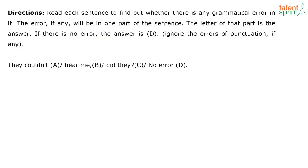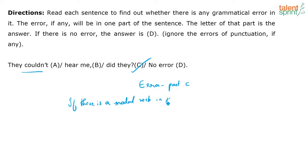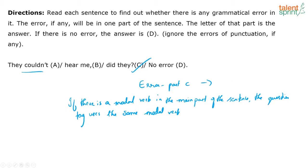They couldn't hear me, did they? The error is in part C. If there is a modal verb in the main part of the sentence, the question tag also uses the same modal verb. So it will be: 'They couldn't hear me, could they?' — keeping in mind that because the main statement is negative, the tag is positive.